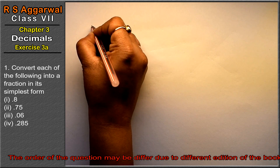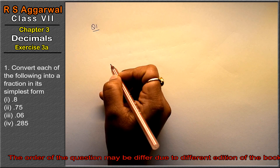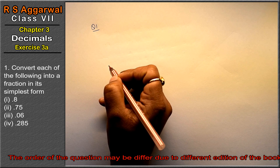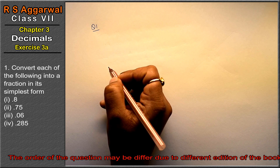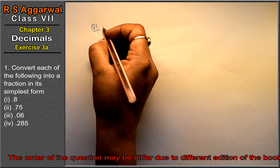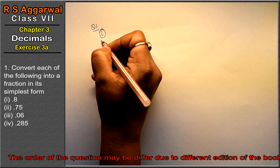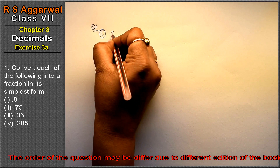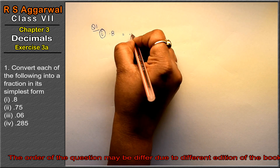Let's do question number 1 of exercise 3a, that is decimals. Question number 1 is: convert each of the following into a fraction in its simplest form. We have to change this decimal and write it in simplest form — simplest form means reduce as much as you can. First is 0.8.